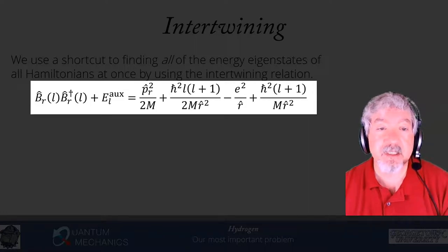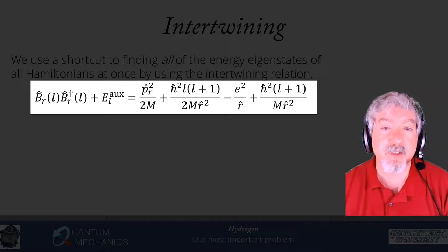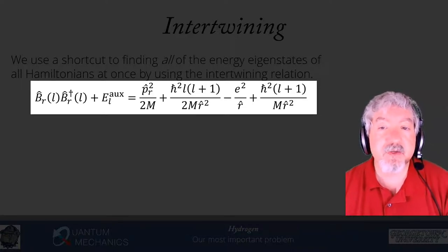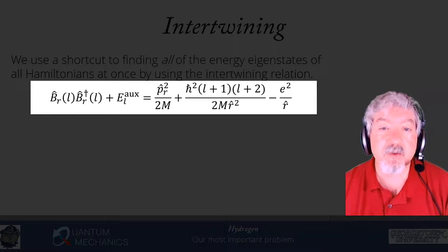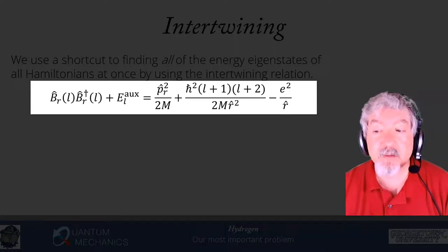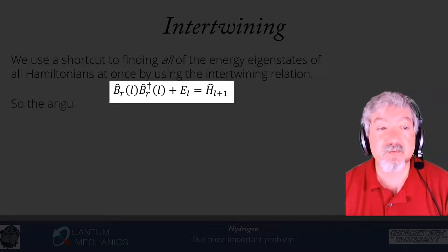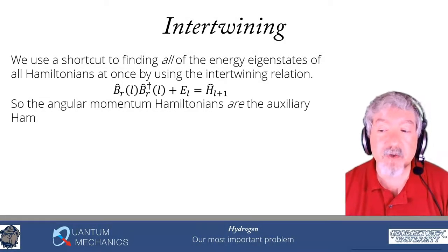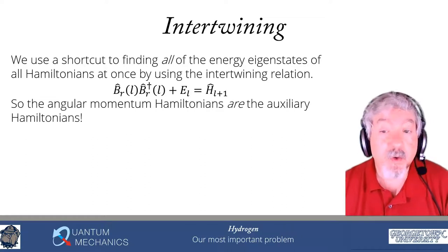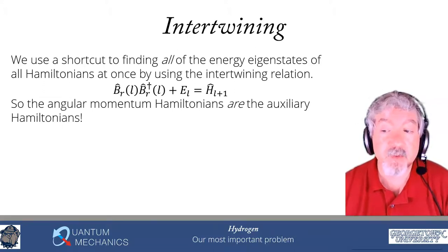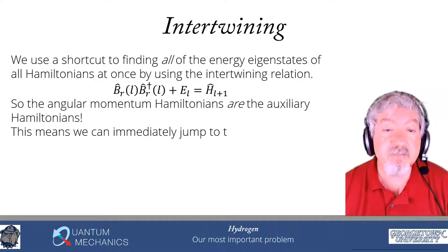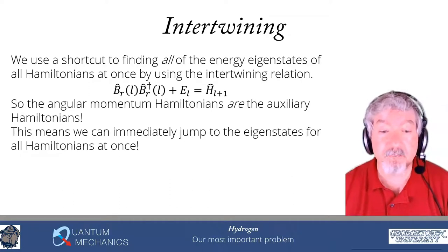When we plug in what H_L is — P_R squared over 2M plus h-bar squared L(L+1) over 2MR squared minus e squared over R — adding h-bar squared (L+1) over MR squared acts like adding 2(L+1) in the numerator, giving L(L+1) + 2(L+1) = (L+2)(L+1), which is exactly H_{L+1}. So the angular momentum Hamiltonians are the auxiliary Hamiltonians. We're essentially done — we can solve everything because we get all solutions of the auxiliary Hamiltonians by solving the first one.